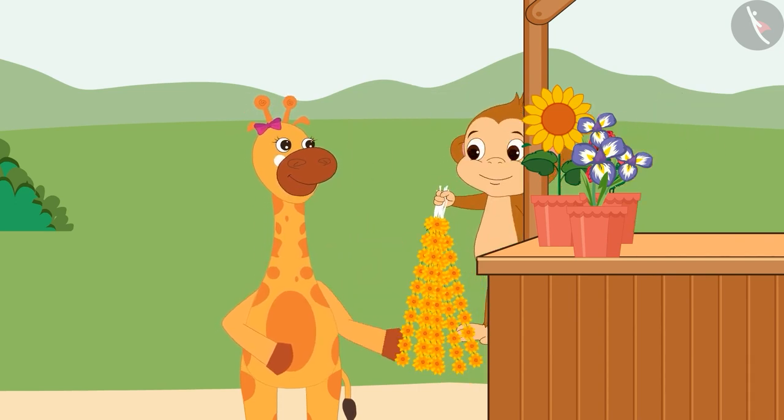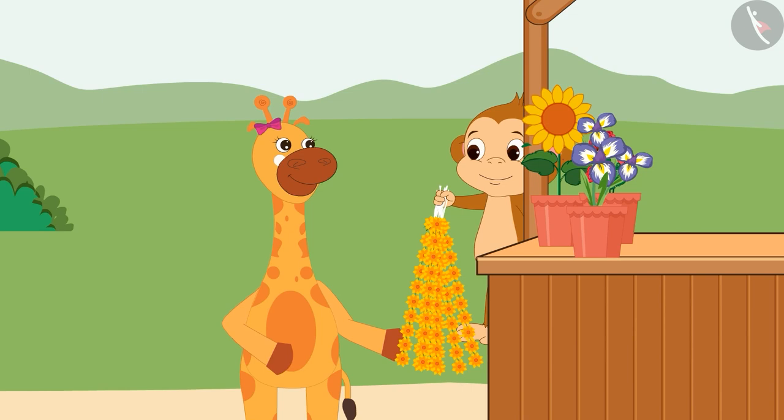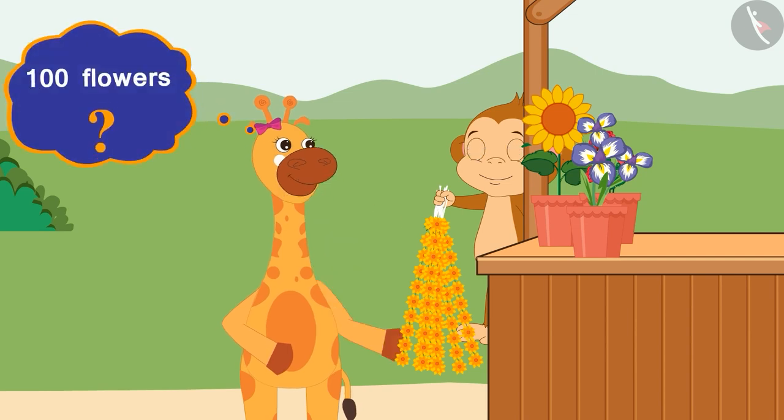Babloo quickly took 10 strings of flowers and gave it to Gaffee. Gaffee got confused. How did Babloo count so many flowers so quickly?